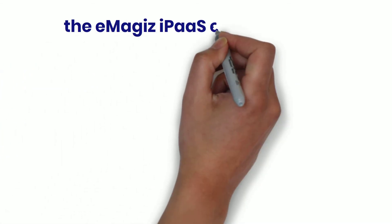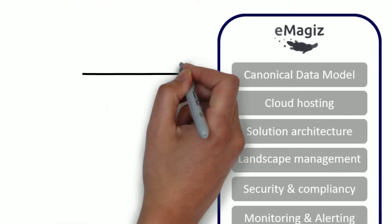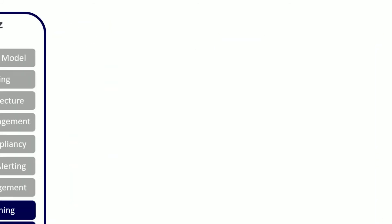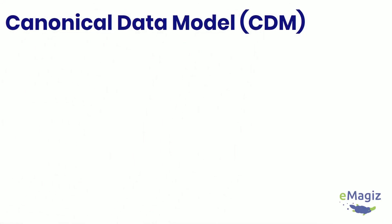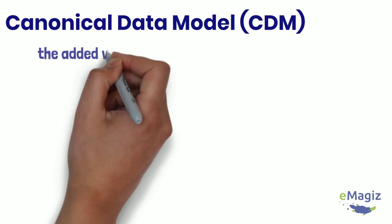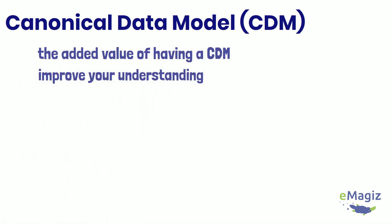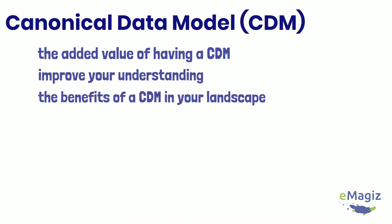Hello. In this short film I'm going to explain one of the core principles embedded in Images iPass: the canonical data model, also called CDM. This video will illustrate the added value of having a CDM in your integration landscape. We hope to improve your understanding of the CDM and the benefits of having a CDM in your Images iPass solution.